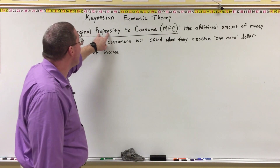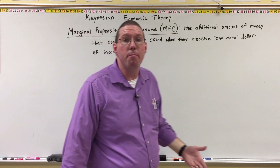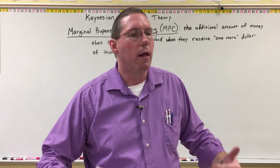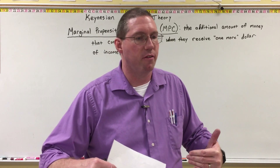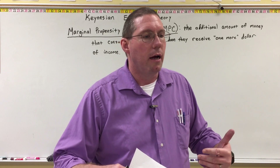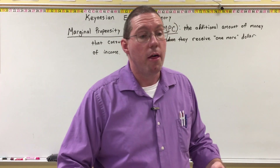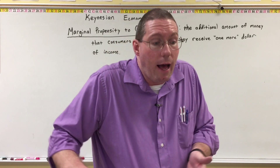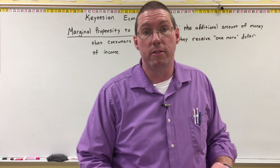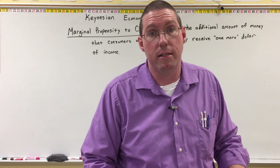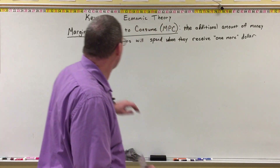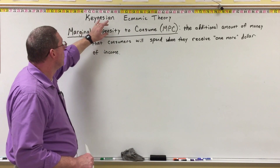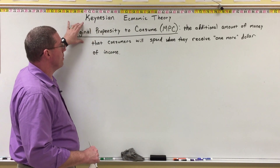What marginal are we looking at here? This is the marginal propensity. The word 'propensity' means the likelihood of something happening. For example, if I have the propensity to eat taquitos, that means I am very likely to eat taquitos — I tend to eat taquitos, I am drawn to eat taquitos. So marginal propensity is the likelihood when one more thing happens.